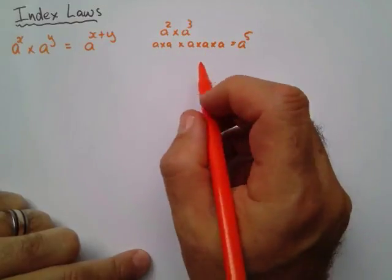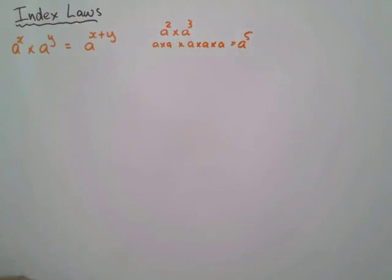How did I get that? I added my two exponents, 2 plus 3 is 5. So that's my first law.